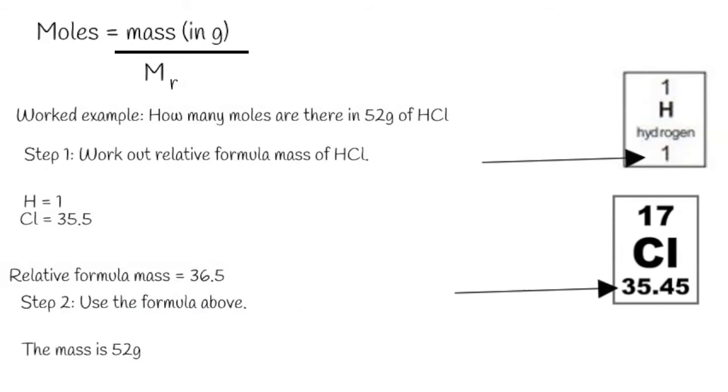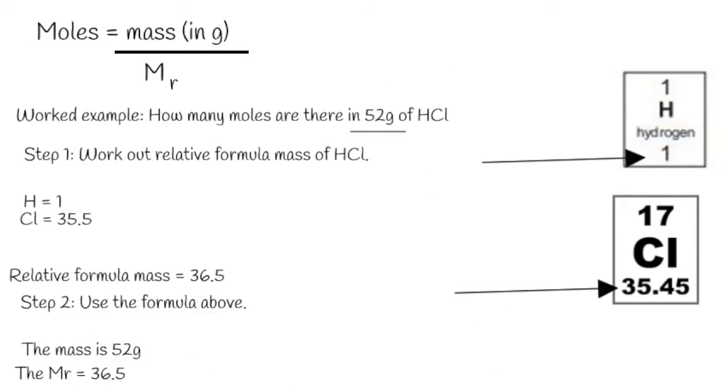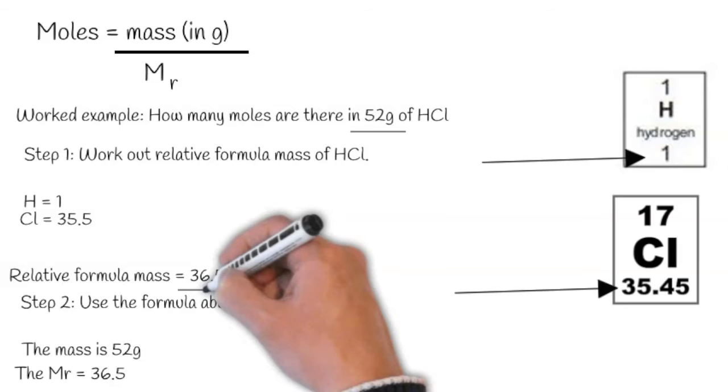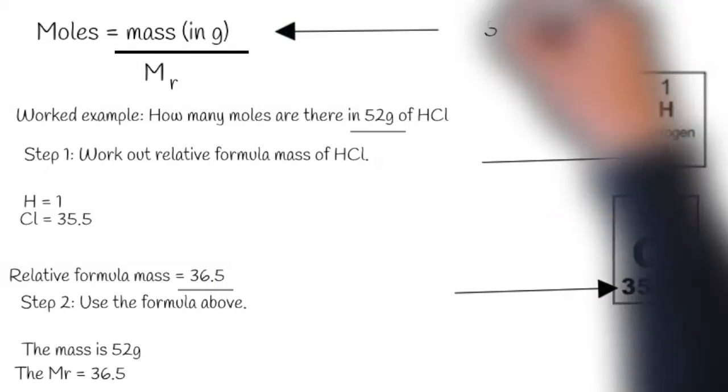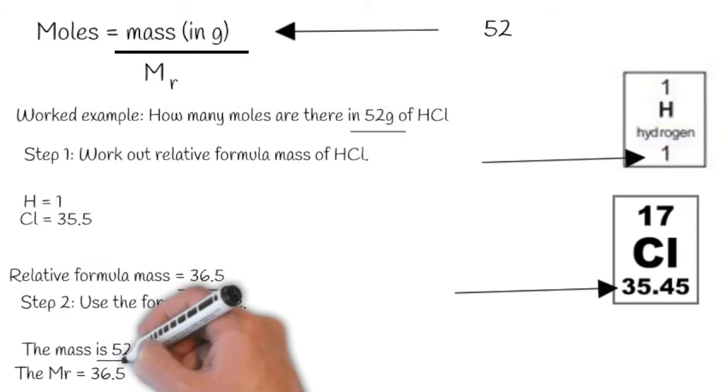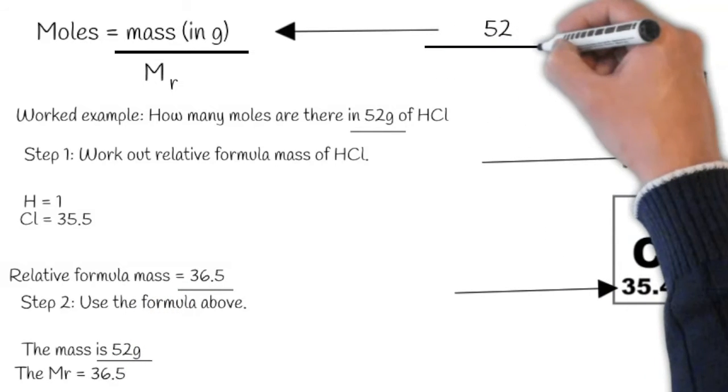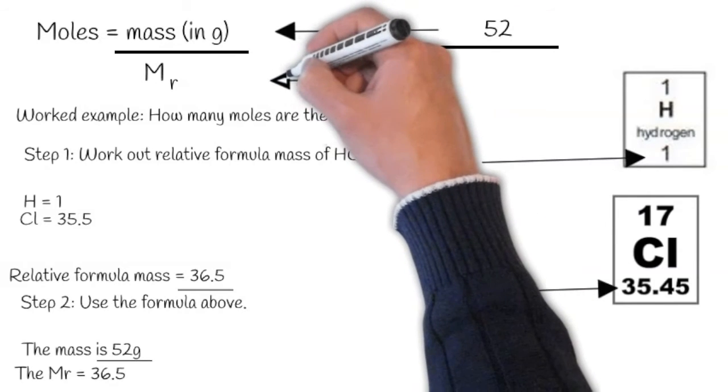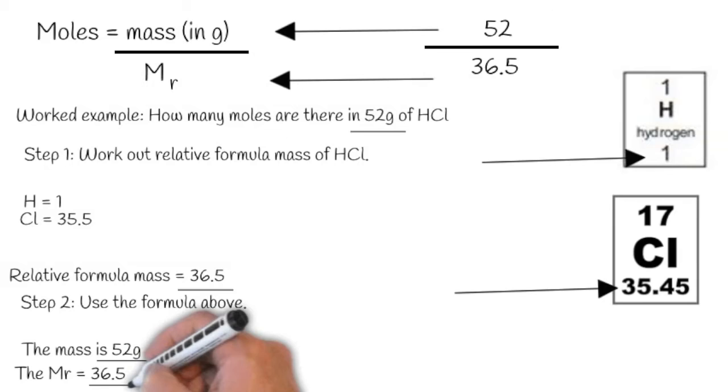We then need to use the equation above. The mass in the question is 52 grams. The Mr we just worked out is 36.5. So let's plug this into the equation. The mass is 52 divided by the Mr, which we worked out to be 36.5, and this gets 1.4 moles. So that is the answer.